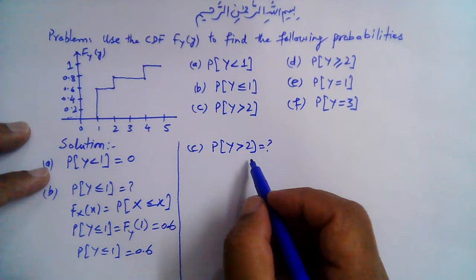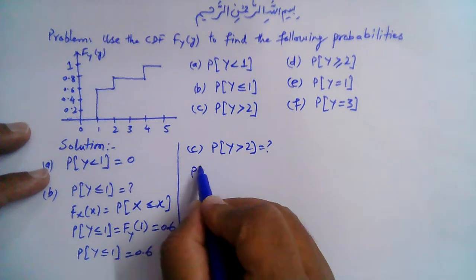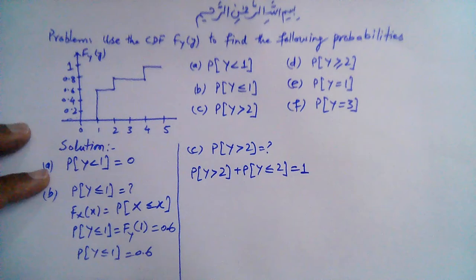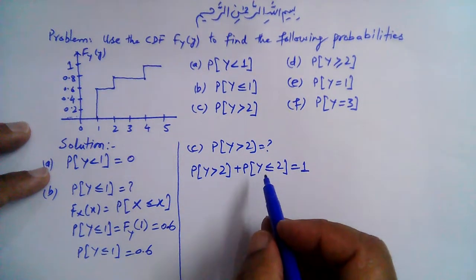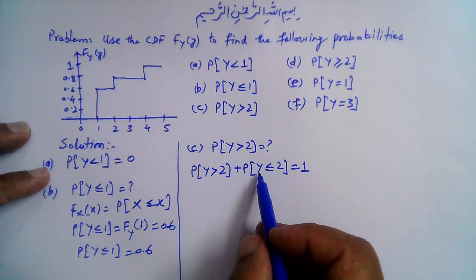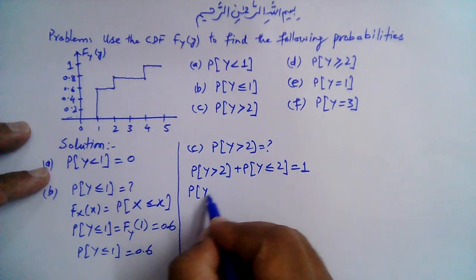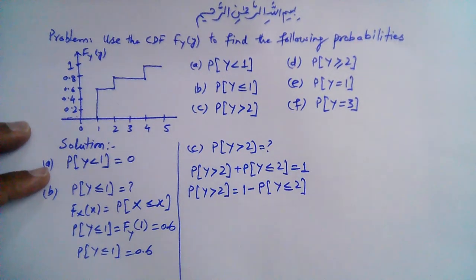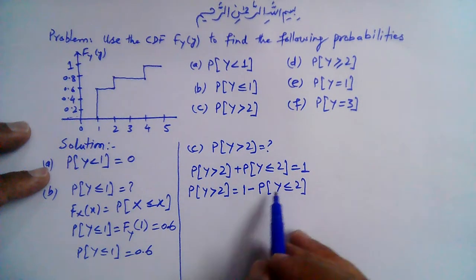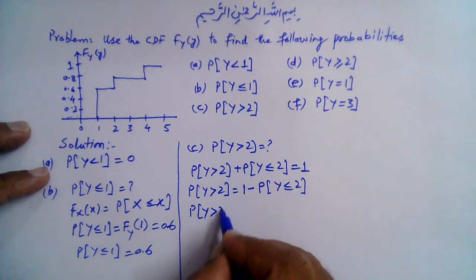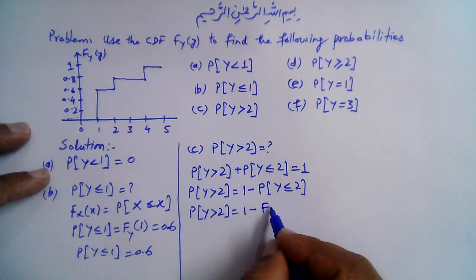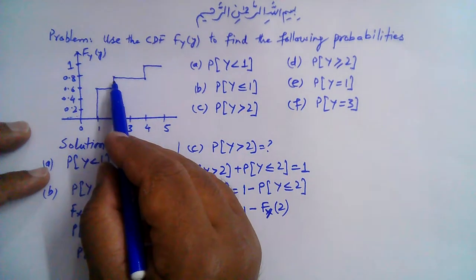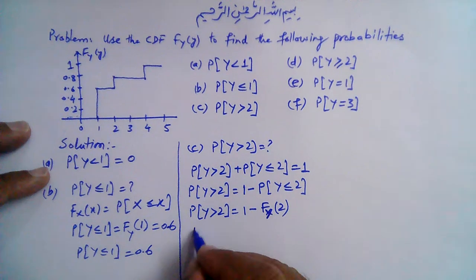Part c: probability that Y is greater than 2. We can see that P[Y > 2] + P[Y ≤ 2] = 1, since Y can be either greater than 2 or less than or equal to 2. Therefore, P[Y > 2] = 1 − P[Y ≤ 2] = 1 − F_Y(2). The value of the CDF at 2 is 0.8, so P[Y > 2] = 1 − 0.8 = 0.2.